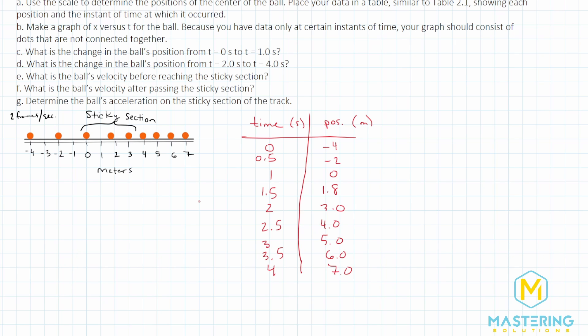For part B, they want us to graph this. Here is the graph I created for our data table, and now we just need to plot these points. At time zero, we have negative four; at half of a second, negative two; at one second, zero. This is what the graph should look like for all the data points as the ball is rolling with the snapshots.